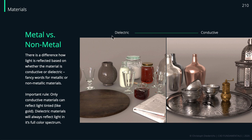All nonmetal materials are called dielectric materials, and materials made of metal are called conductive materials. Basically, if they can conduct electricity they're conductive; if they cannot, they're dielectric. So glass, plastic, paper, wood, and ceramics are all nonmetal dielectric materials, while gold, aluminium, copper, etc. are conductive metal materials.